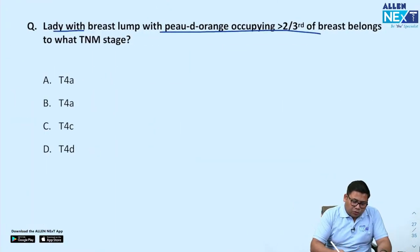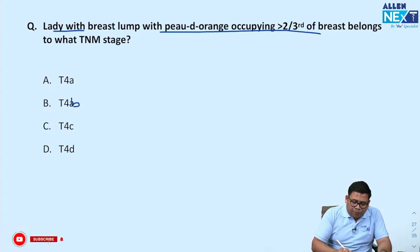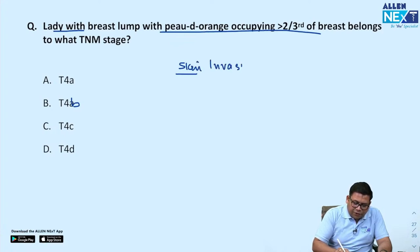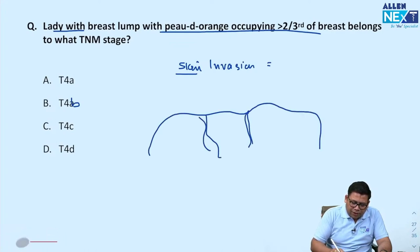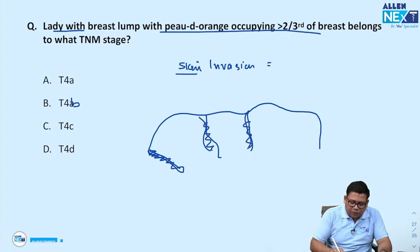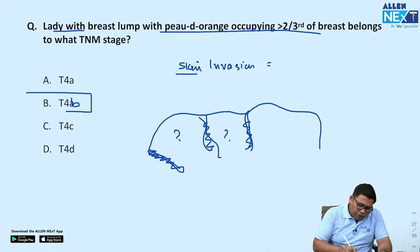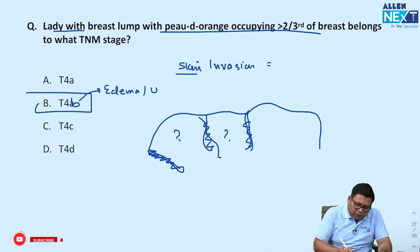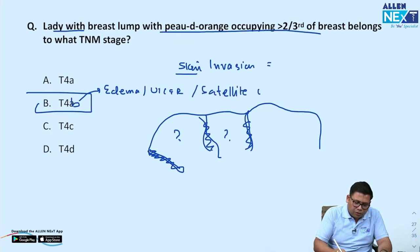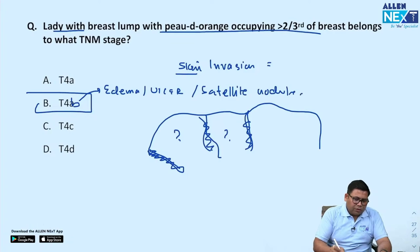Lady with breast lump and peau d'orange occupying more than two-thirds of the breast. Peau d'orange means skin invasion due to blocked dermal lymphatics — tumour cells block the dermal lymphatics causing subcutaneous oedema. This is T4B. T4B includes oedema, ulcer, or satellite nodule.